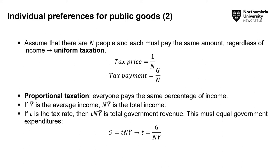There are two forms of taxes. First, we have uniform taxation — also called a lump sum tax. Let's say you have 100 individuals who all pay 100 pounds in tax regardless of how much they earn. The argument is often that this is unfair because those that are poor pay exactly the same amount as those that are wealthier. Then you get a proportional tax, where everybody pays the same percentage of income — for example, everyone pays 25%.